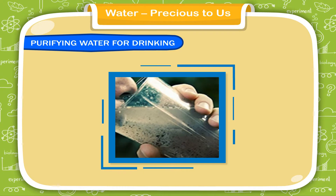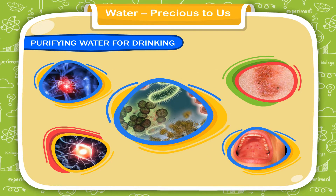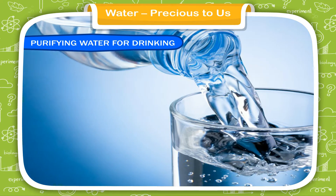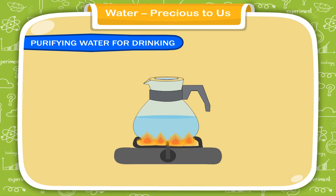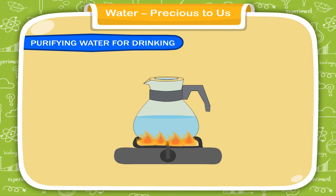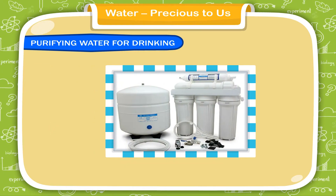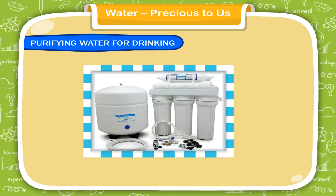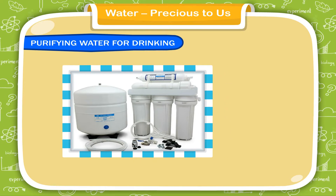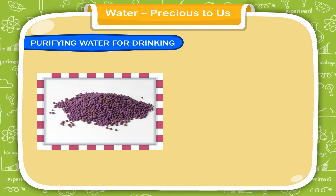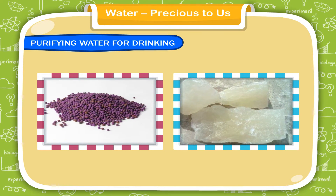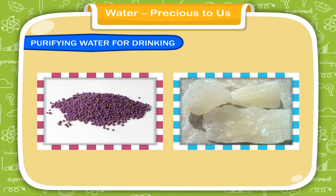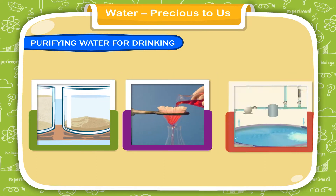Purifying water for drinking: impure water contains germs that can cause all sorts of diseases. Water can be purified as follows — water can be boiled for 10 to 15 minutes to make it safe for drinking; ultraviolet water filters can be used, though the filter candle should be cleaned frequently; potassium permanganate or alum can be used to purify water. In towns and cities, water supply is purified by sedimentation, filtration, and chlorination.